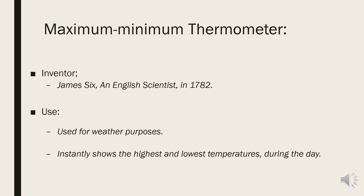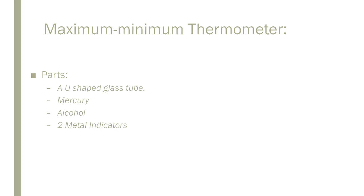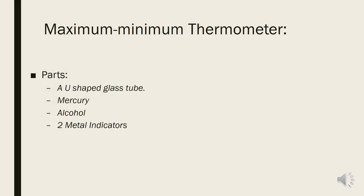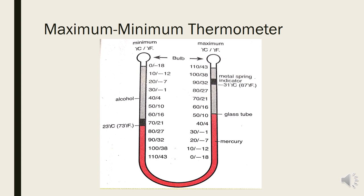A maximum minimum thermometer is used for weather purposes. It instantly shows the highest and lowest temperatures during the day. A maximum minimum thermometer comprises of a U-shaped glass tube, mercury, alcohol, and two metal indicators. This is the picture of a maximum minimum thermometer. In this picture we can see all the components and where they are placed.